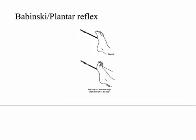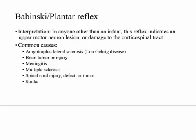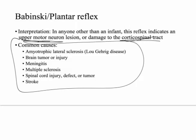Babinski slash plantar reflex — these are the same thing according to Wikipedia. You should have a downgoing response any time you're over one year old (some sources say six or four months, but to be safe, over one year old it should be downgoing). Our patient had an upgoing response on the right side, which typically indicates an upper motor neuron lesion or corticospinal tract lesion. Common causes include ALS, brain tumor or brain injury, meningitis, multiple sclerosis, spinal cord injury, or stroke.